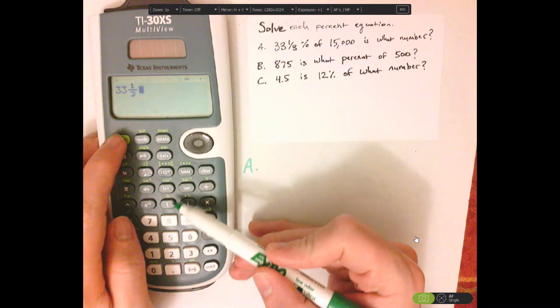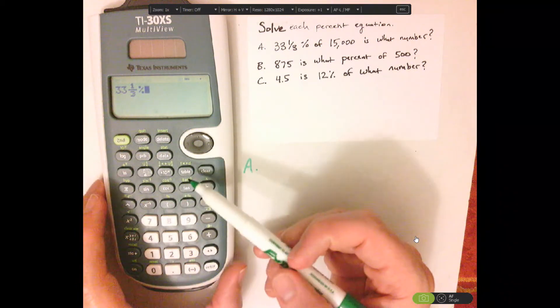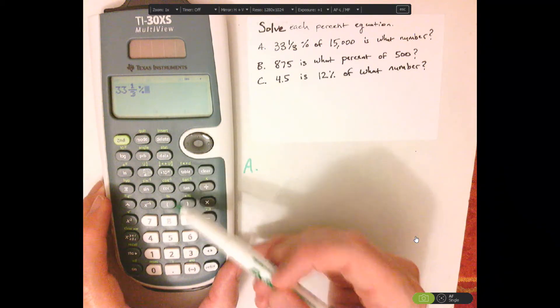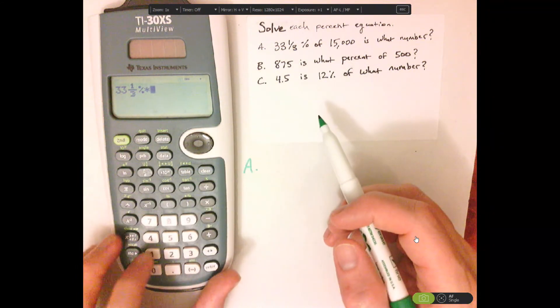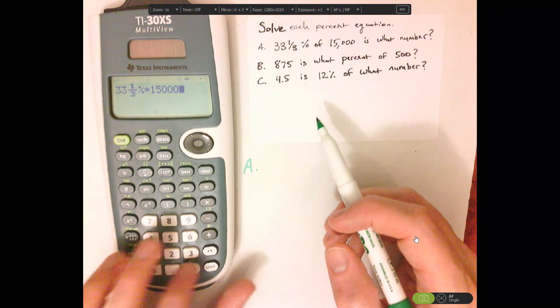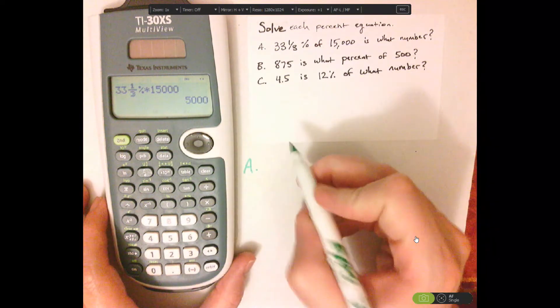So that's right over the left parenthesis. So 2nd, and then push the parenthesis to get the percent. And I'm going to multiply this by 15,000. That's going to give me 5,000.